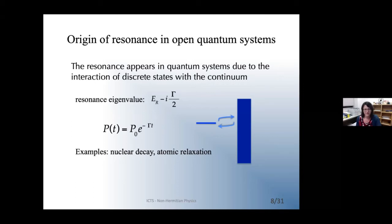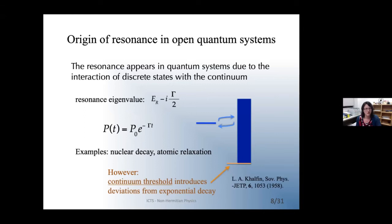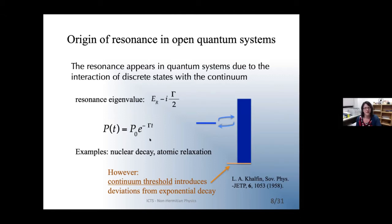However, a full picture of the dynamics is more complicated. Recall the continuum threshold: its existence means that exponential decay is always an approximation — a very good one, but an approximation. Specifically, there are always deviations from exponential decay at the very shortest and very longest time scales. In most experimental circumstances these deviations are extremely difficult to detect, but we'll touch on cases involving the exceptional point where those effects can be dramatically enhanced.